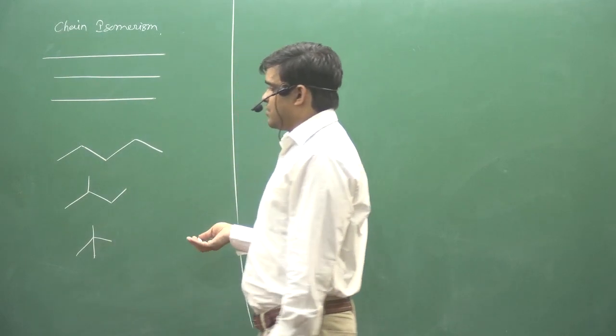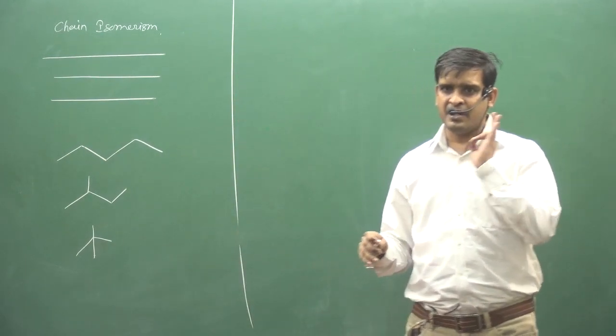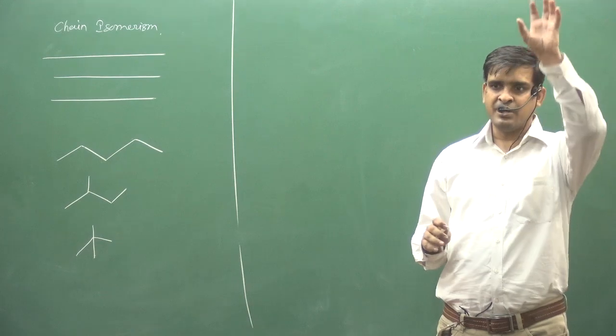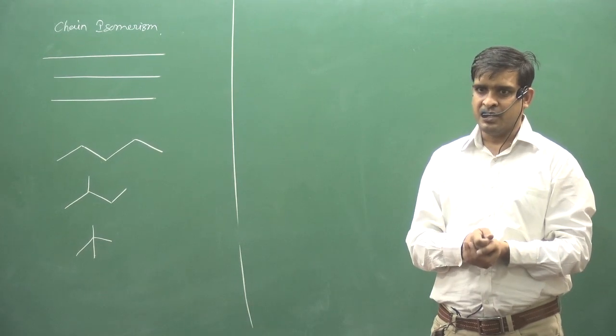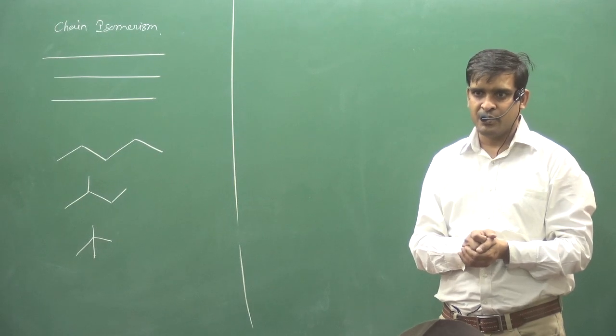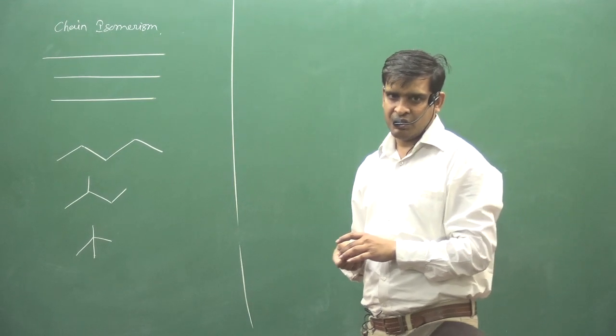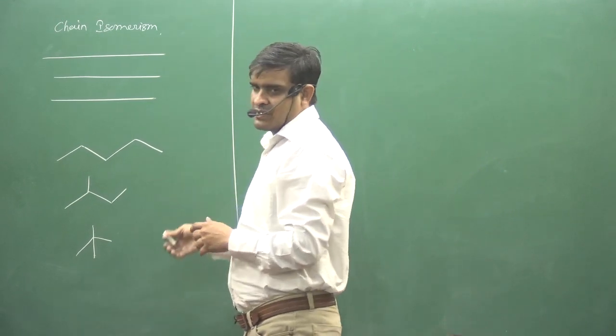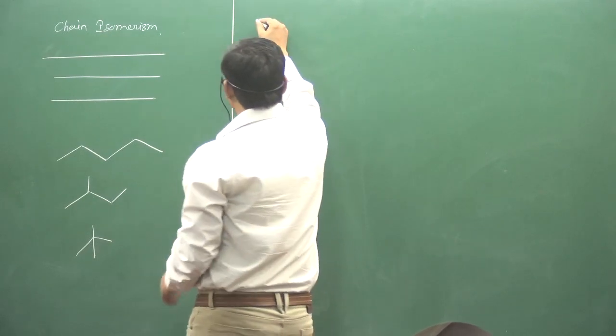To chain isomers ke liye aap ko kuch nahi hai. Main principle pe agar chain kam hai aur koi dusri isomers show nahi ho rahi. Ye se seniority kaun thi? Ring chain number one, tautomers second, functional third, metamers four, fifth chain. Phir iske baad aayega position.